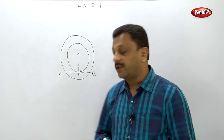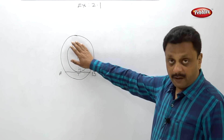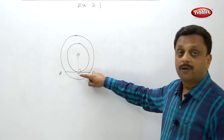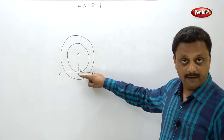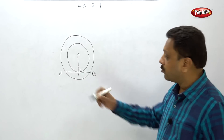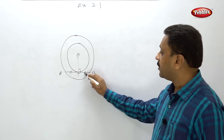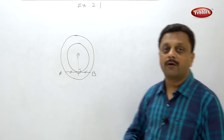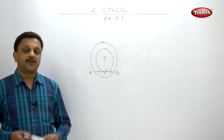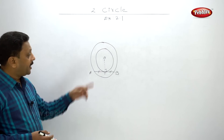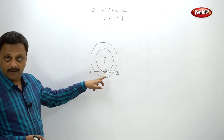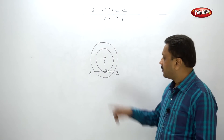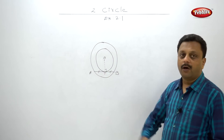By the theorem: the line perpendicular to a chord from the center always bisects the chord. So by this property, these two sides are equal and hence T is the midpoint of AB.